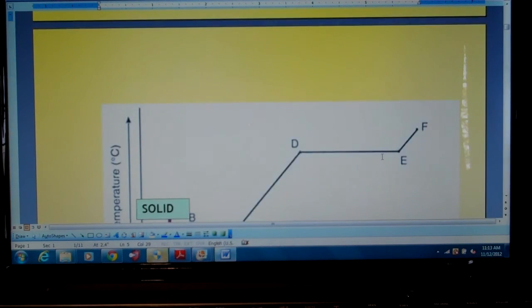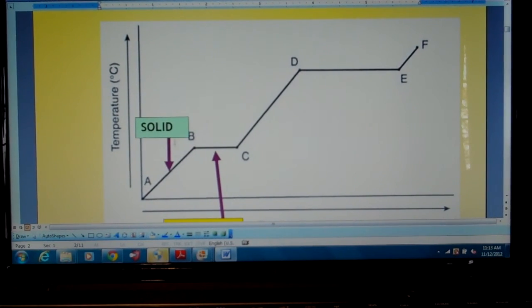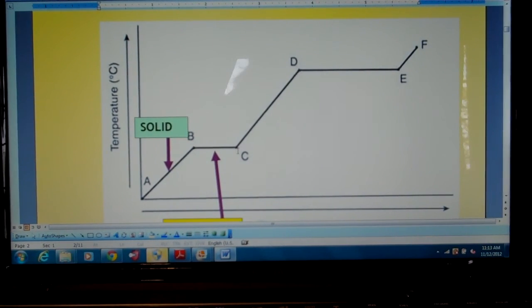And now to just take a look at our graph, our heating curve. As you can see, when we're talking here between A and B, that is just a solid. When we're here between B and C, that is when we have equilibrium. That's our melting freezing point equilibrium.